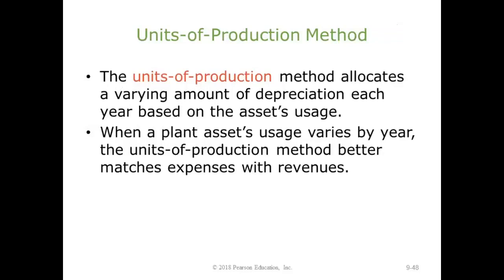Now let's take a look at units of production — this is a little bit different. What I want to do here is look at how many units are being produced per year. Depreciation expense with the units of production method is probably going to be different every year based on the number of units produced. When a plant asset's usage varies by year, the units of production method better matches revenues with expenses, because you're actually matching up how much was generated and how much was used up. This gives you a better depreciation, a better way to gauge the asset's value, and a better concept with the matching principle.